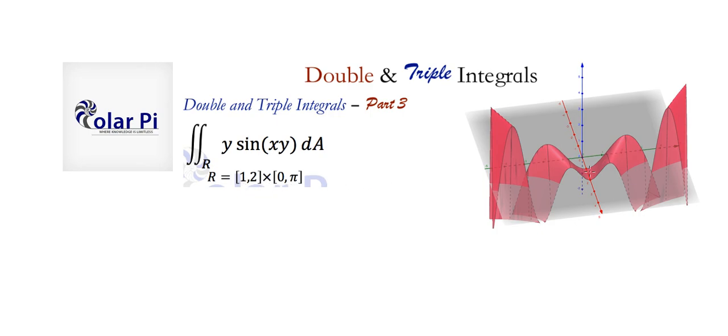Now, this graph of our surface z equals y times sine of xy is restricted along the x axis from 1 to 2 just like our region r, but clearly it's not restricted along the y because it takes on both negative and positive y values and the y axis is the green axis right here. But clearly in our region r, y is restricted to go only from 0 to pi.